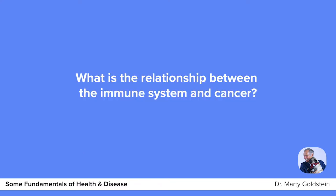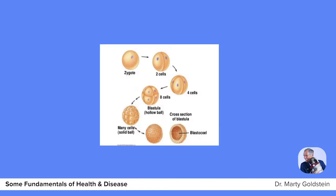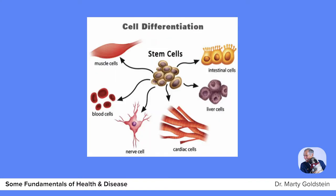What is the relationship between the immune system and cancer? I always use the embryonic analogy to explain this simplistically. We all start life as two cells that become one — the sperm penetrates the egg in fertilization, forming a one-cell individual called a zygote. Then the zygote splits into two cells, two into four, four into eight, and on and on until you have probably millions of cells that go through different stages.